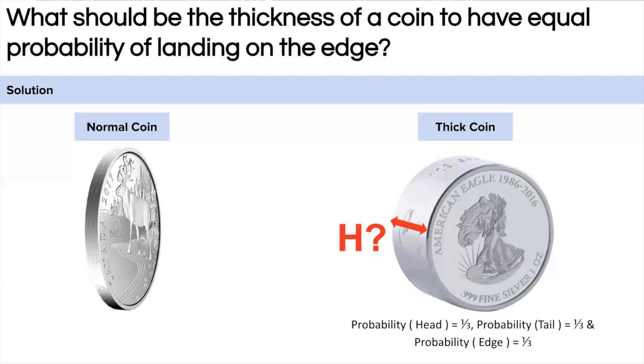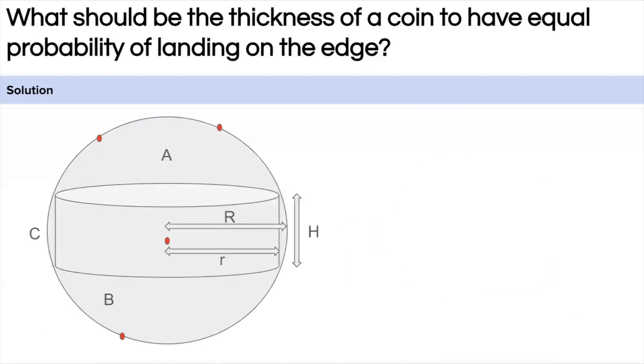So let's see how we can go about this. Here we have inscribed the coin in a sphere in such a way that it is touching the inner surface and is symmetrically distributed in the upper and the lower part. The capital R is the radius of the sphere, the small r is the radius of the coin, and H is the thickness of the coin, or you can say height of the coin.